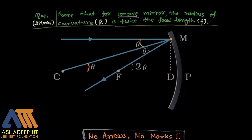For paraxial rays, the angle with the principal axis is very small, nearly equal to zero. Because theta is very small, point M shifts and point D and point P are almost at the same place, so we can consider D and P to be equal — the same point.